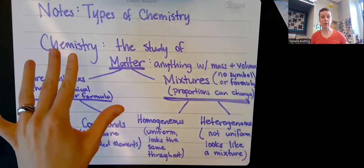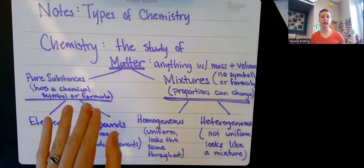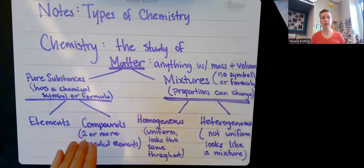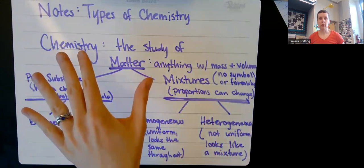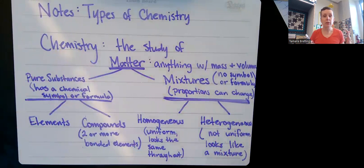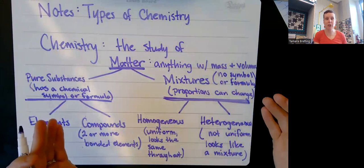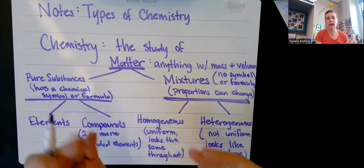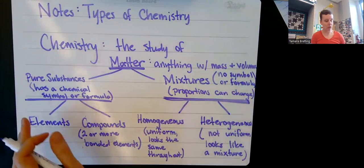So that's a refresher of chemistry in general. Matter is a really broad category. We divided it into two subcategories, and then divided each of those subcategories into two more subcategories. Whether you're studying mixtures or elements, you are performing chemistry. Now we're going to talk about the different types of chemistry you can use to study those things within matter.